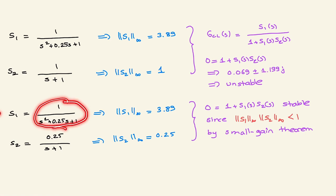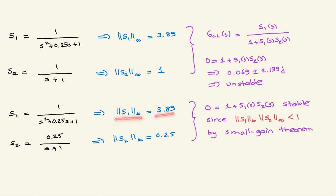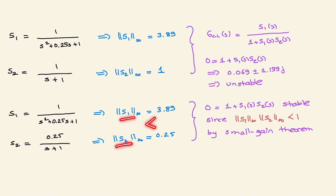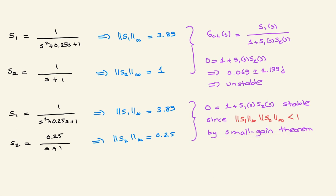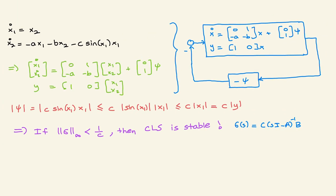In the second example, we have the same S1 but a slightly different S2. Here the H-infinity norm of S1 is 3.89 again, but the H-infinity norm of S2 is 0.25. So S1 times S2 will be less than one. Since this is a sufficient condition, we know that the interconnection of S1 and S2 is stable — every pole will be on the left half plane.